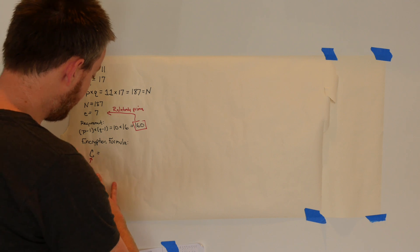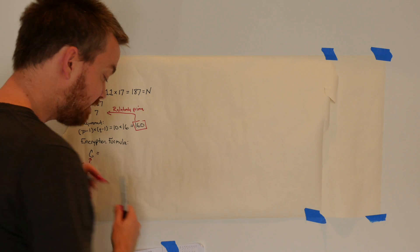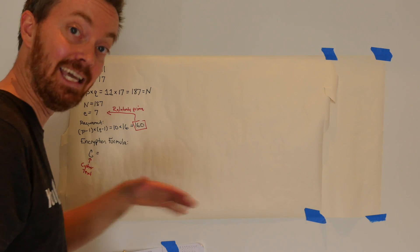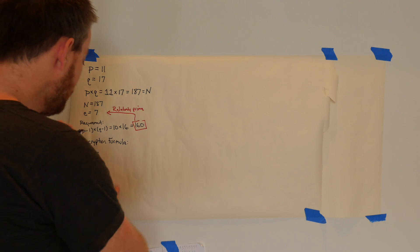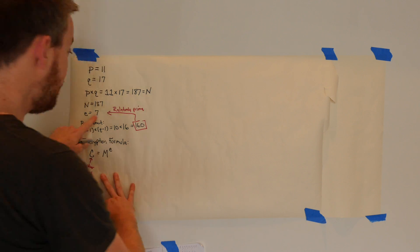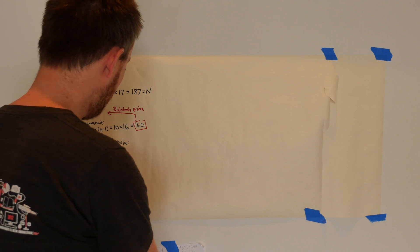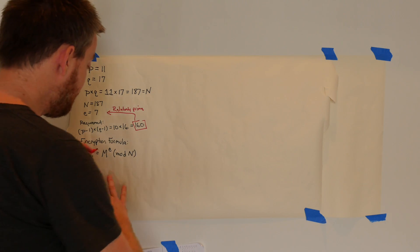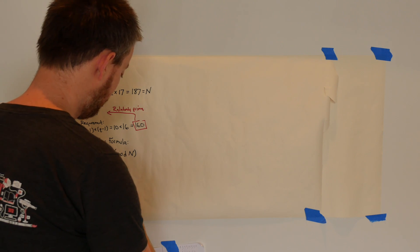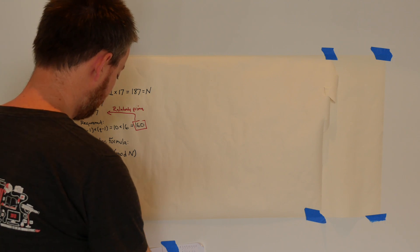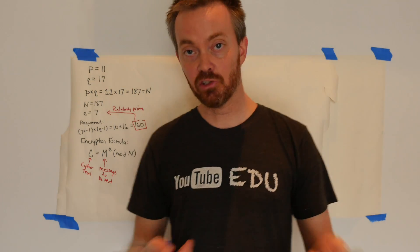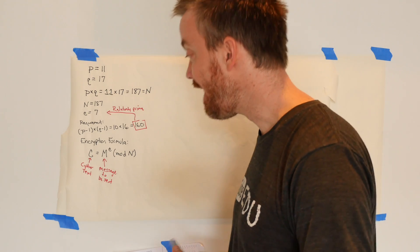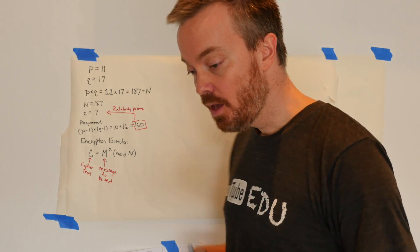Our encryption formula uses C to denote the ciphertext — the encrypted message that gets sent over the internet. The formula is: C equals M raised to the power of E, mod N. M is the message we want to send. Since we're using computers, everything gets converted into binary, which then gets converted into a decimal number, and that decimal version is what gets processed.